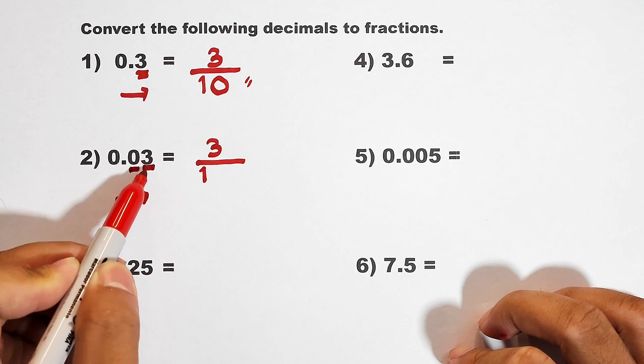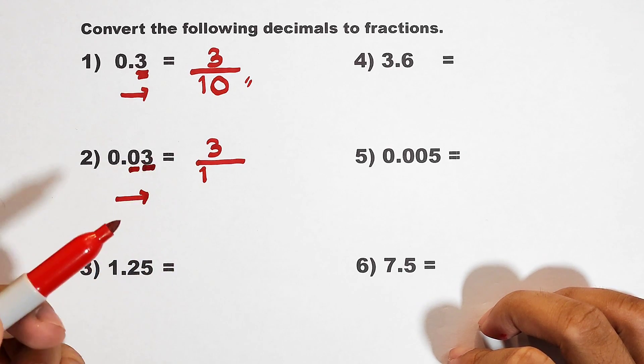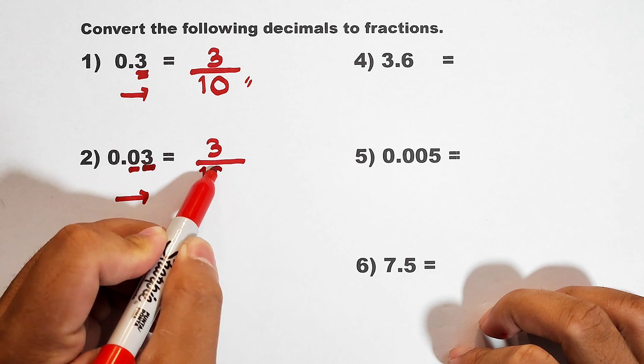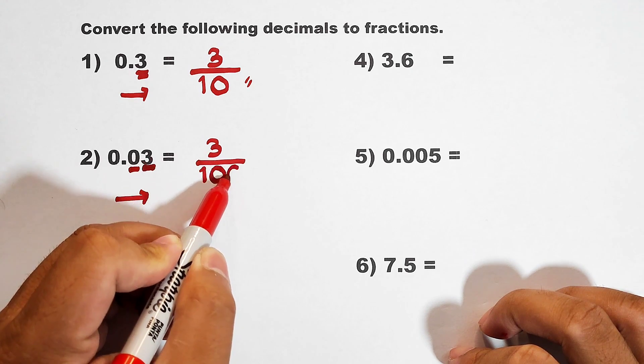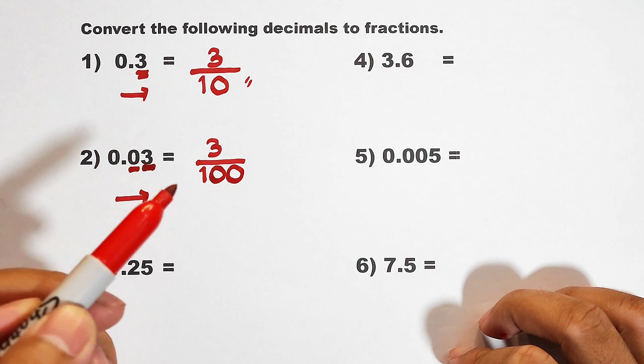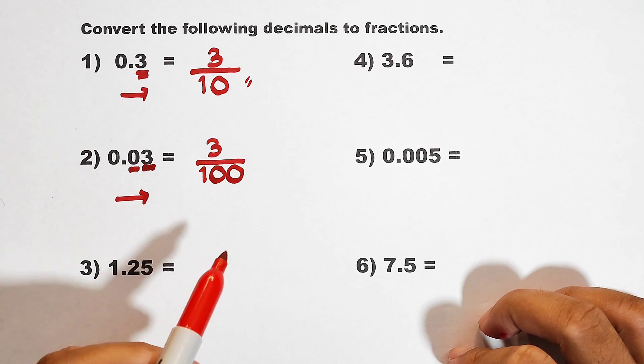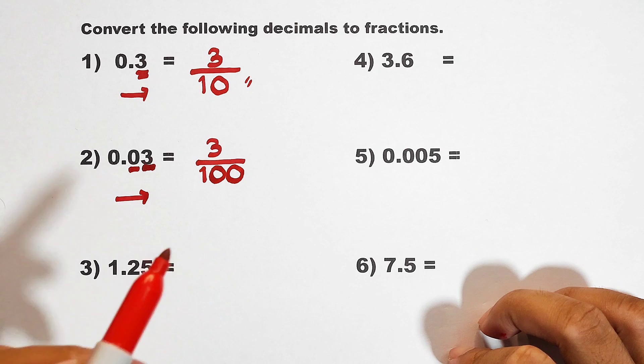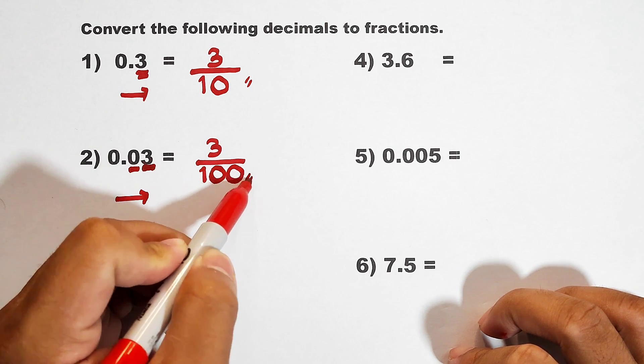Again, 1 and 2. Meaning, we will add two zeros here in your denominator. As you can see, we already have 3 over 100 in which this one is already in simplest form. So this is the answer.